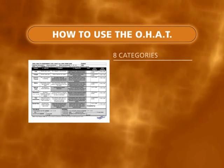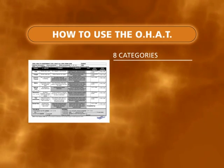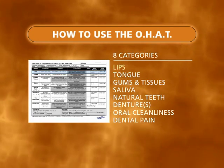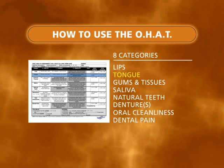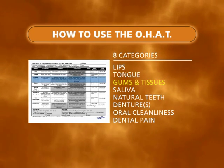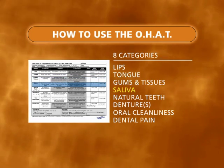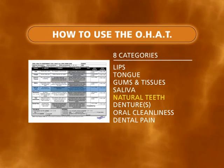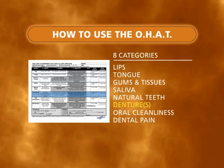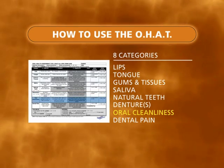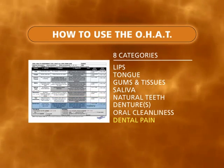The eight categories we will examine are: lips, tongue, gum and tissues, saliva, natural teeth, dentures, oral cleanliness, and dental pain.